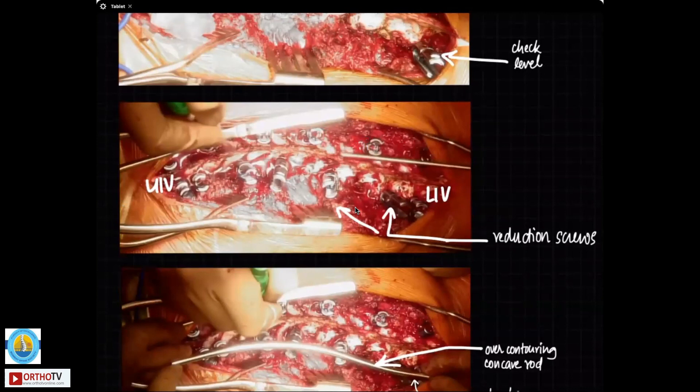So here in this patient I have skipped some areas where I have not put in screws. Notice that I have put all reduction screws on the concavity. This is the upper end vertebra. This is the lower instrumented vertebra.